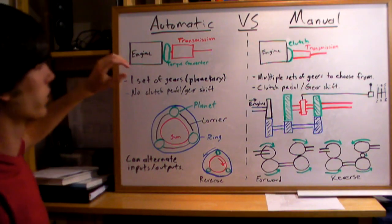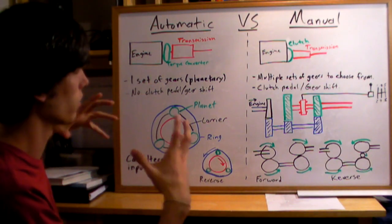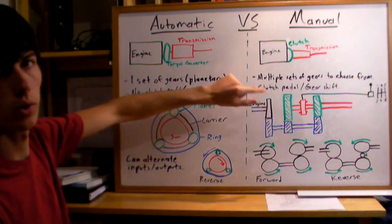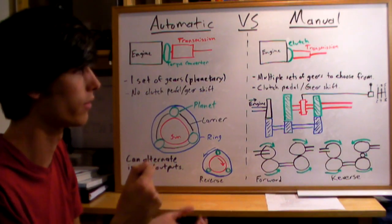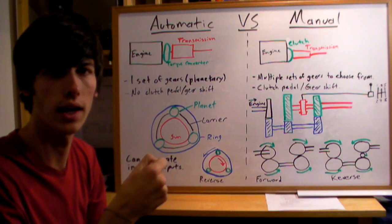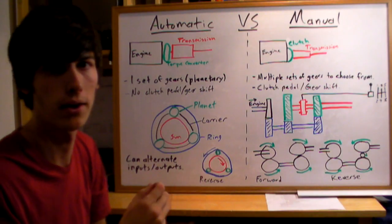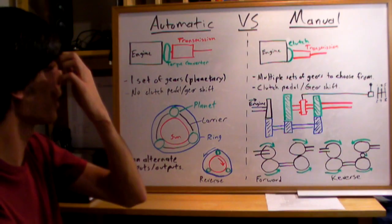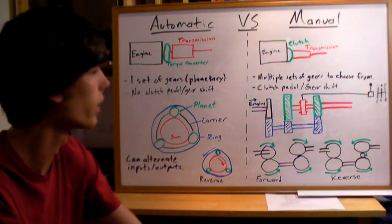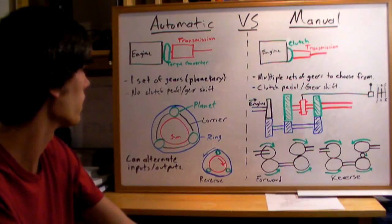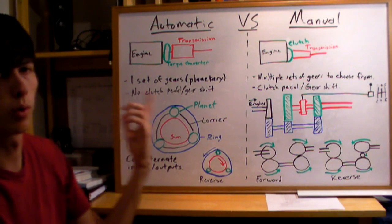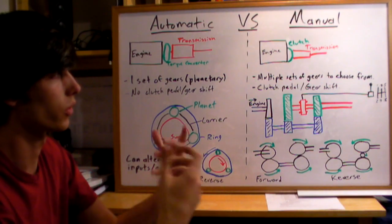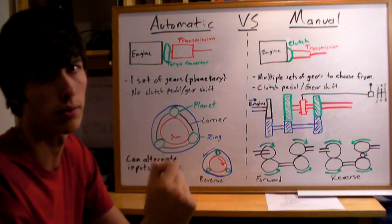An automatic is going to have one set — or most will have two sets — of planetary gears, whereas a manual will have multiple sets of gears to choose from. You'll have a gear shift and a clutch, a third pedal, and you can choose between the different gears — first, second, third, fourth, fifth, reverse. In an automatic, the car's computers do it for you based on engine speed and how fast you're going, so there's no clutch or manual gear shift.